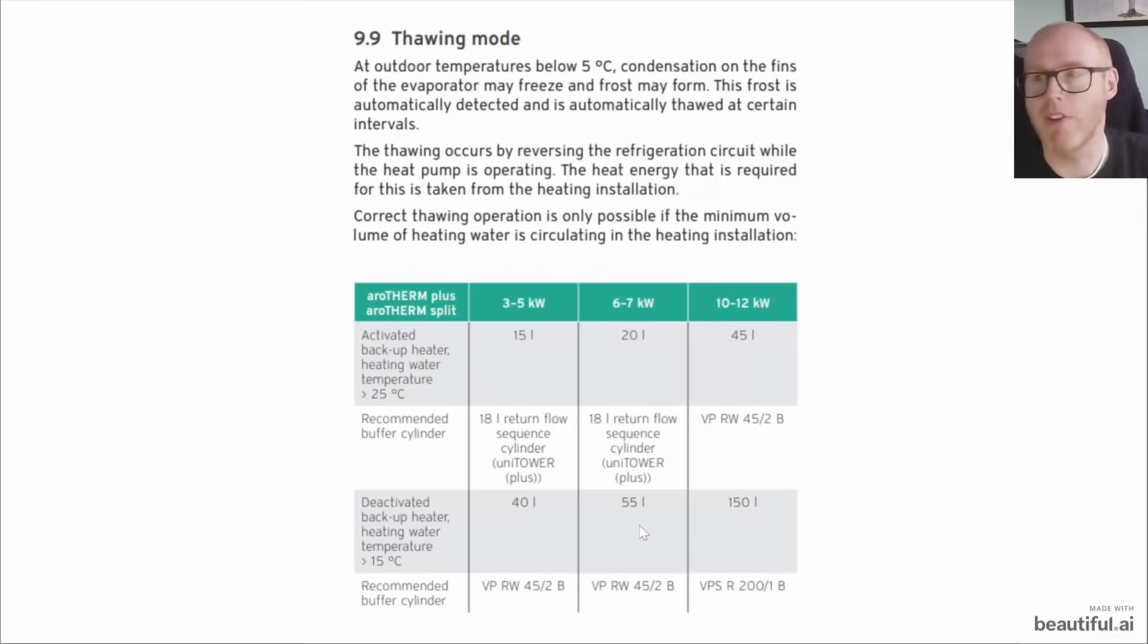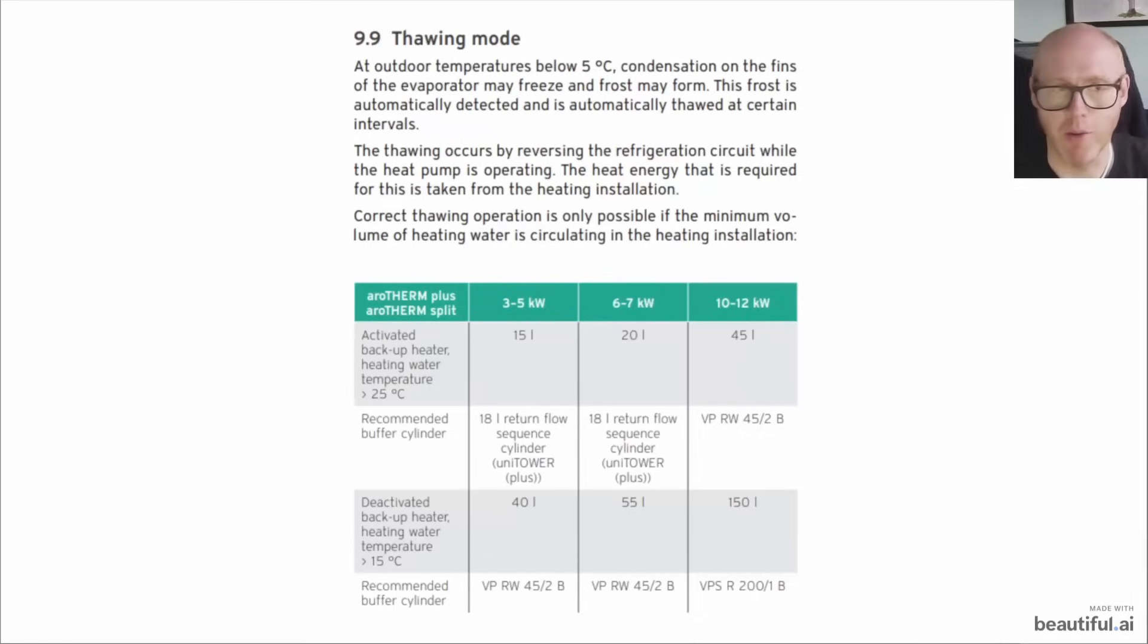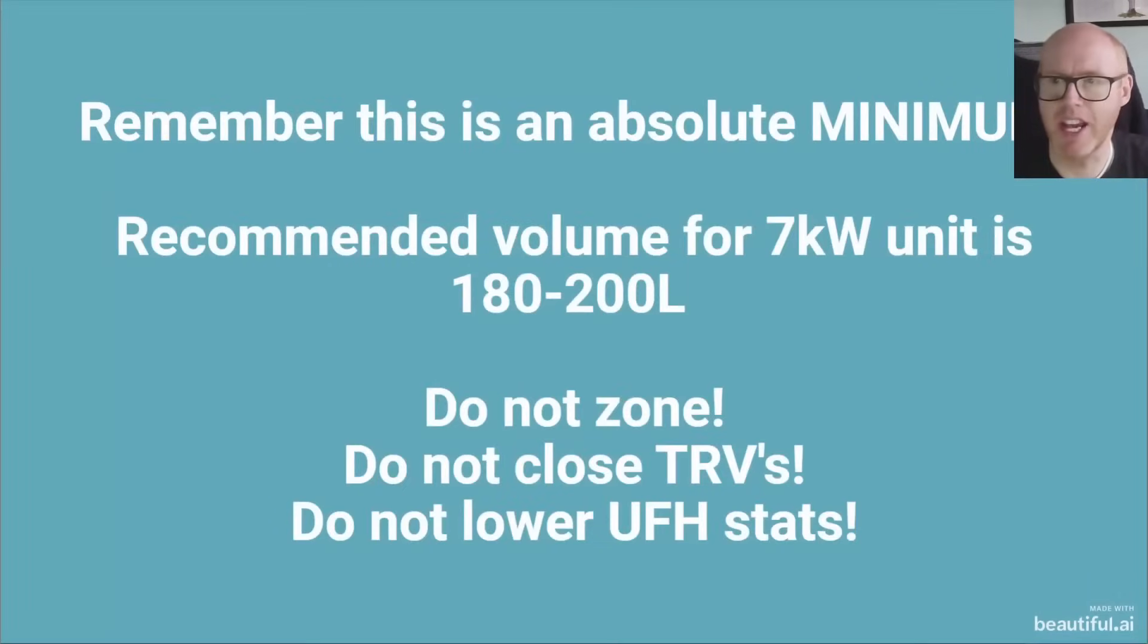There's many variables, but that gives us a little ballpark. A lot of people look at the manual and they go, oh 55 litres, that's all I need for a 7 kilowatt Arotherm Plus, but they can quickly run into problems if they are at that sort of level. We have heard of this death spiral and end of the world scenarios, but remember that this is an absolute minimum of 55 litres.